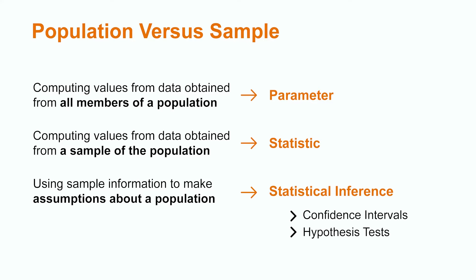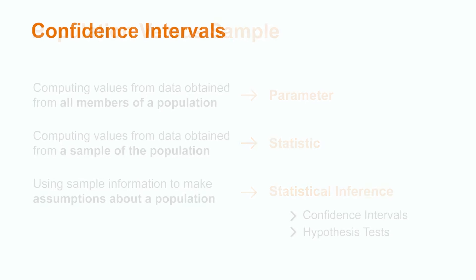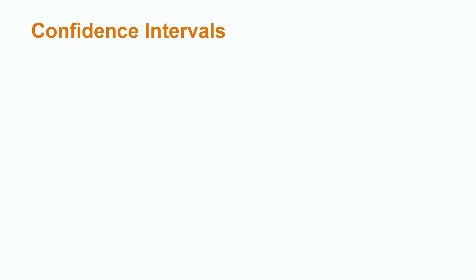The two types of statistical inference we will discuss in this lesson are confidence intervals and hypothesis tests. One way to estimate a population parameter is using a confidence interval. Confidence intervals tell us how confident we are that the true population mean is contained within a given interval.